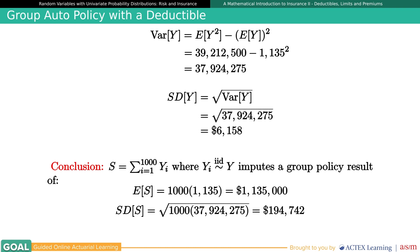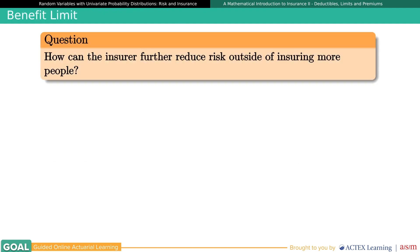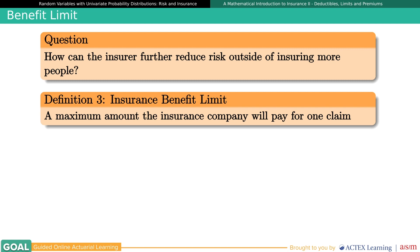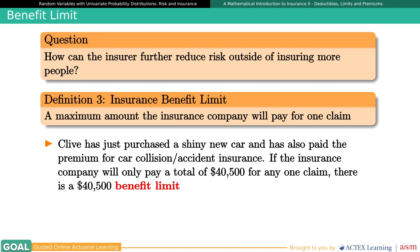As our last insurance term, we end on the idea of a benefit limit. This is a way to control how large a payout the insurance company will have to make on any single claim. There are other ideas that control this in practice, such as reinsurance, though that is not explored in Exam P. The benefit limit is the highest dollar amount the company will pay out for any single claim. For example, under Clive's policy, the company stipulates they'll only pay out a maximum of $40,500 for any one claim — meaning if Clive's car is totaled, the most he can get is $40,500.